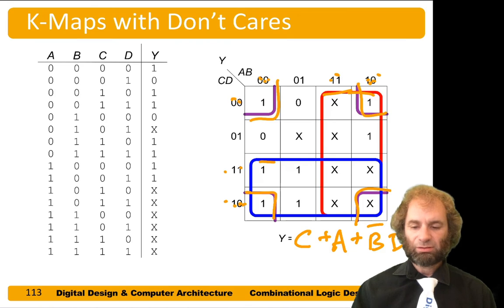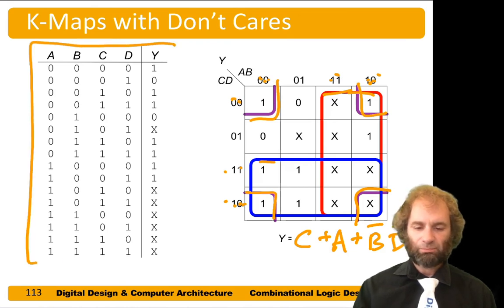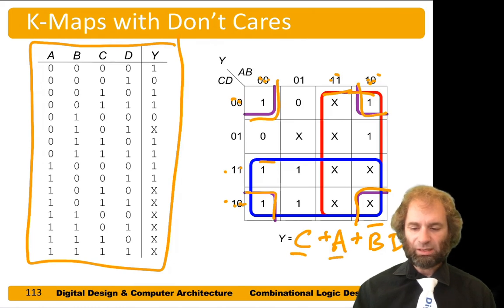So the simplest minimal sum of products expression for this truth table is C or A or B bar D bar.